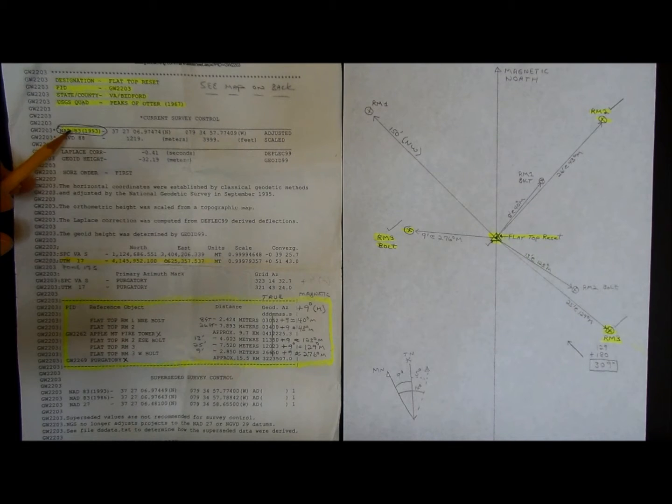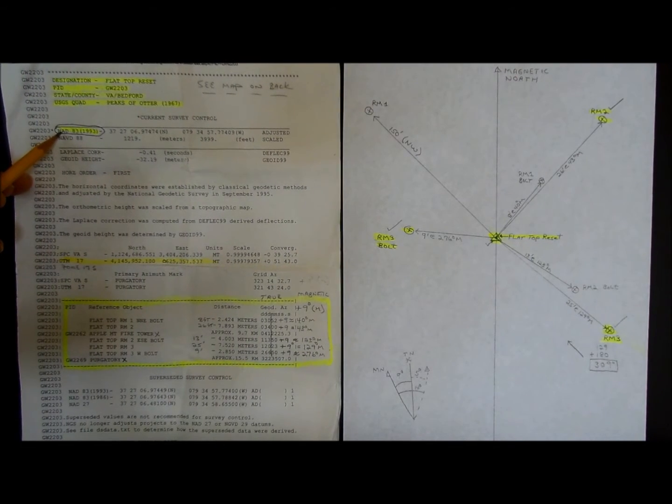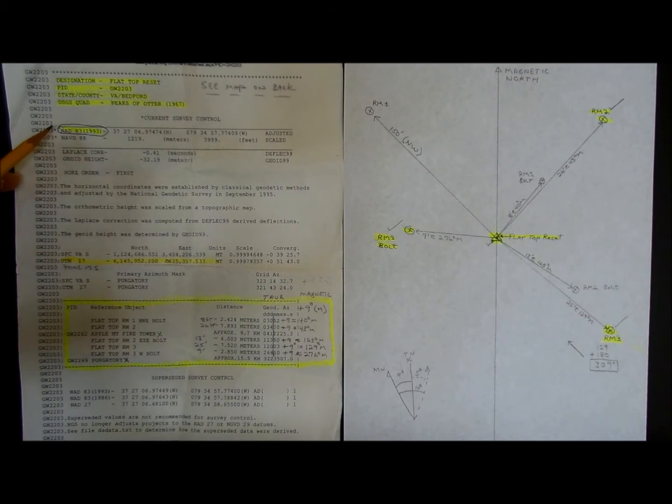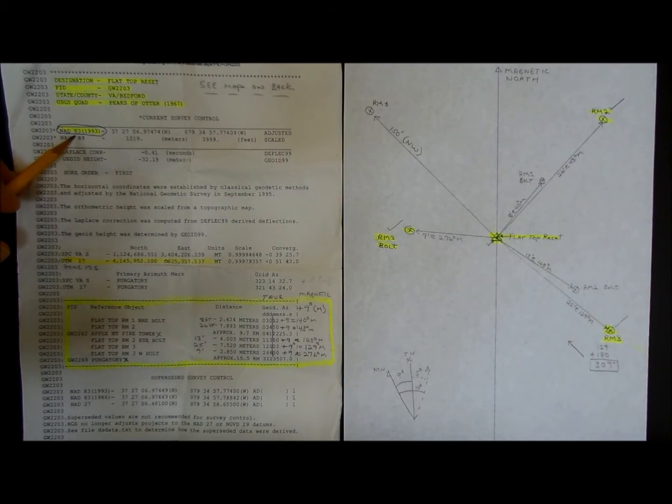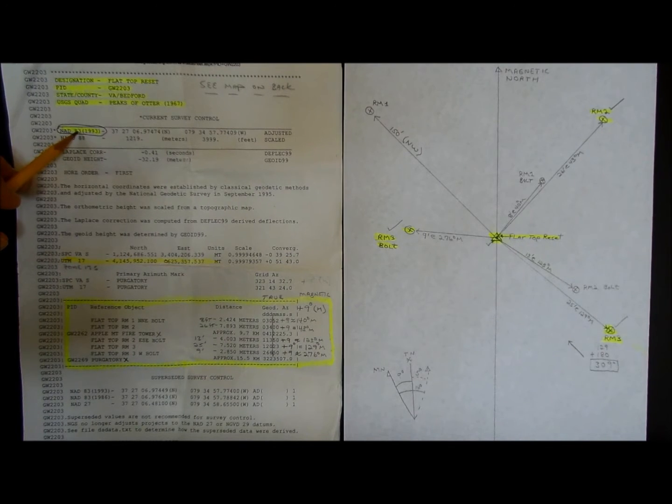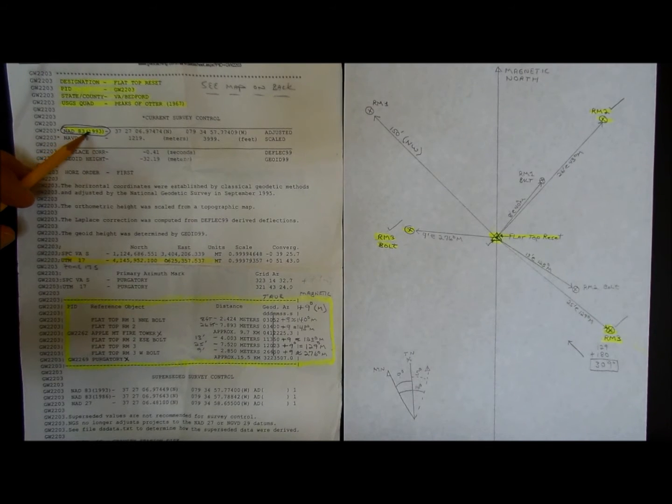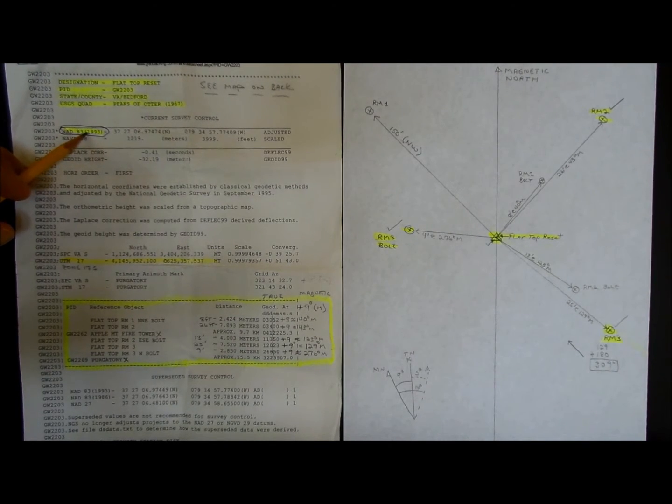Another thing you need to take notice is the datum reference. On a lot of my hiking videos, I talk about NAD 27. This one uses NAD 83. So if you're out with your GPS, you would set your GPS datum to NAD 83, and then the coordinates on your GPS will conform to these coordinates.